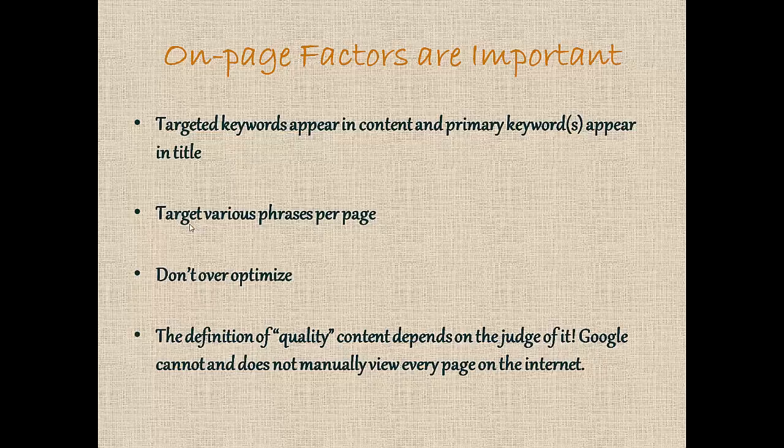On-page factors are still very important. Targeted keywords should appear in the content, and primary keywords should appear in the title. Target various phrases per page — don't just target one keyword on each page. You want one primary keyword in the title, and that should be a keyword with a decent amount of monthly searches. A general rule of thumb is 800 or more monthly searches per internal page.